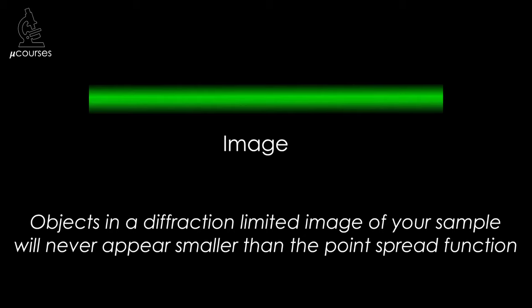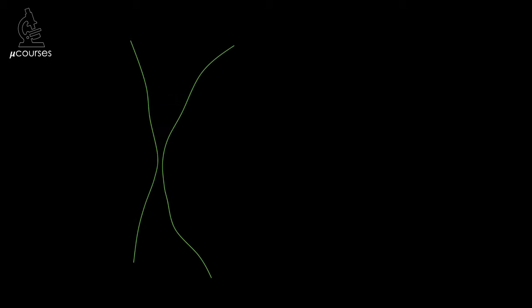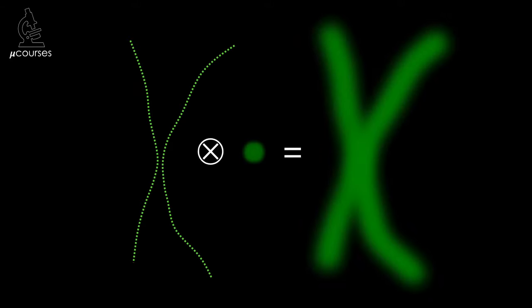A really important take-home message here is that regardless of how small an object is in your sample, in a diffraction-limited image, that object will never appear smaller than the point spread function. Let's say you have two microtubules in your specimen, labeled with one of the green fluorescent proteins conjugated to tubulin, and you image them with a 1.4 NA oil objective lens. Microtubules are 25 nanometers in diameter, and the point spread function for this optical setup would be about 240 nanometers. So each fluorophore in the microtubule will be convolved with the point spread function, resulting in an image like this.